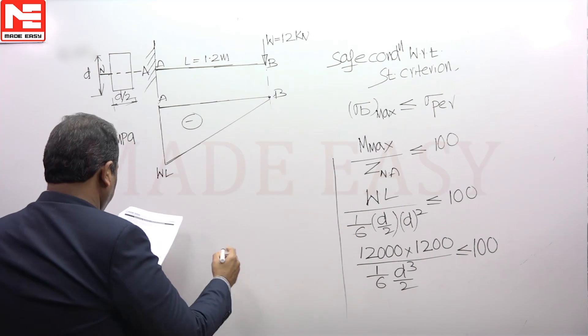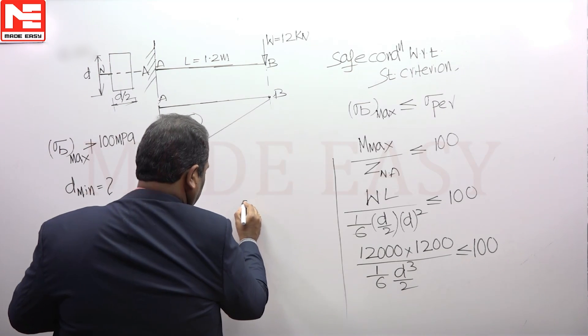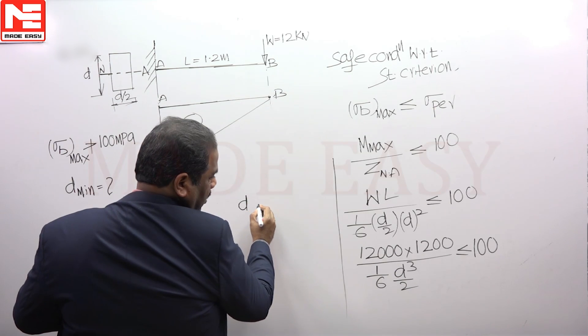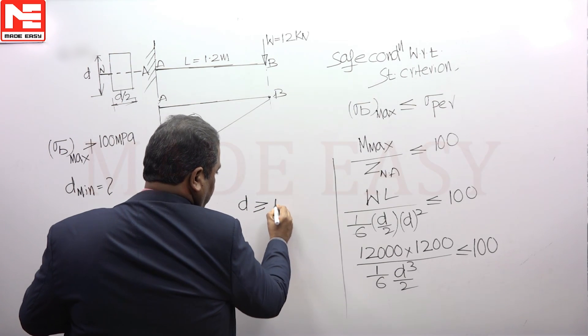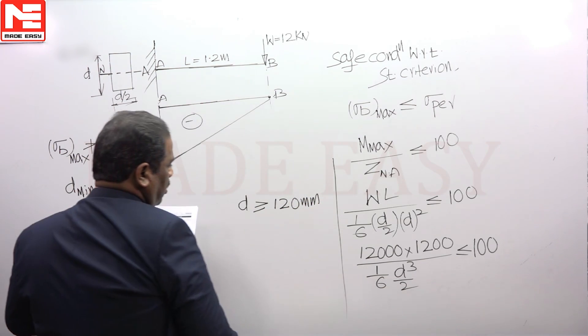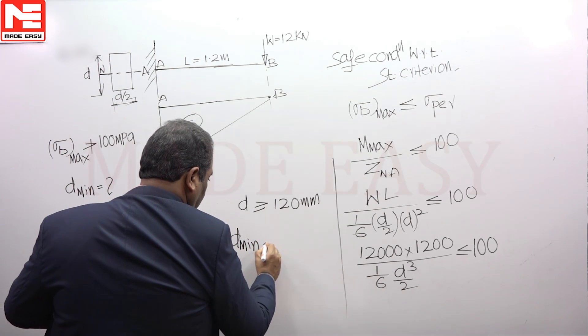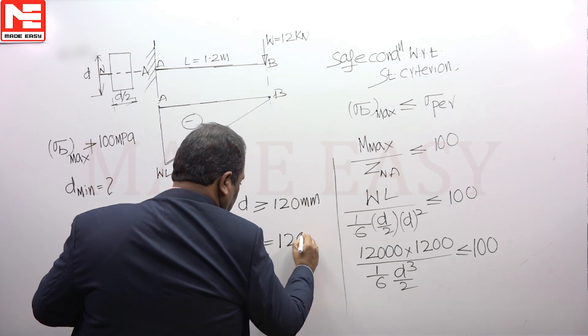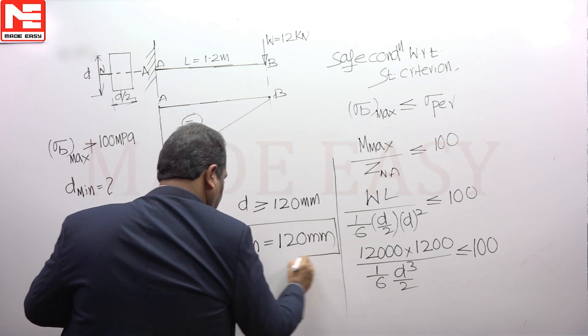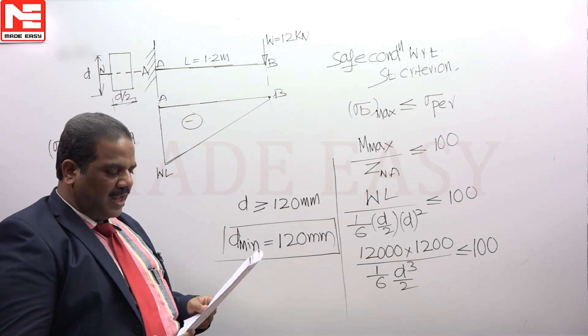From this, if you can simplify, you will get D greater than or equal to 120 mm. So the minimum depth should be 120 mm. The minimum depth to be provided is going to be 120 mm.